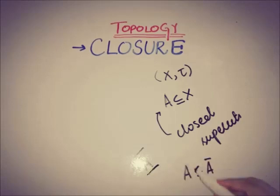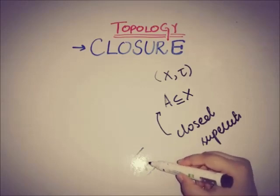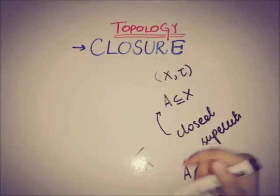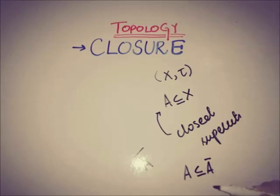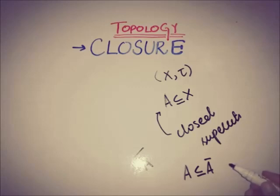We are not saying that A is a closed set — we are saying that Ā (A bar) is a closed set. So when we talk about any closure, the closure is the smallest closed set.